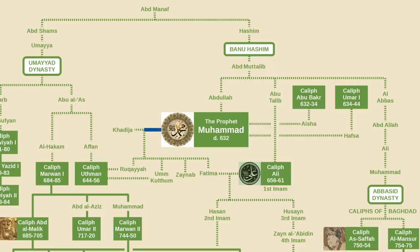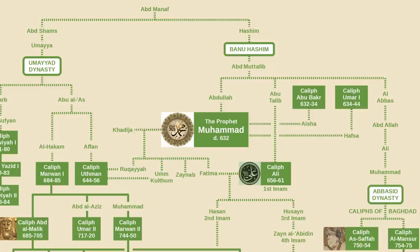Muhammad's first wife was named Khadija. He was married to her and only her for about 25 years. Prior to marrying Muhammad, she was actually a wealthy merchant in her own right. Together, they had three sons and four daughters. All three sons died at a young age, but the four daughters lived to adulthood. Two of them would later marry one of the early Umayyad caliphs, and another, named Fatima, would marry Ali, one of Muhammad's closest companions.